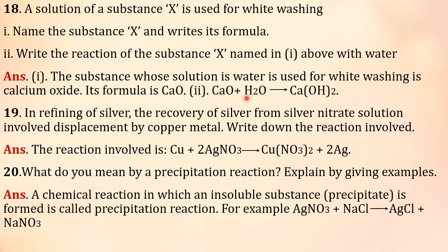In refining of silver, the recovery of silver from silver nitrate solution involved displacement by copper metal. Write down the reaction involved. So what he has asked here is to write the reaction between silver from silver nitrate. So silver nitrate is AgNO3. So to remove Ag from AgNO3, we have to select such a metal which is more reactive than the silver, that is nothing but copper. So when the copper is made to react with the silver nitrate, copper being more reactive than silver displaces the silver. So that silver is formed and that is recovered and used for the ornamental purposes.